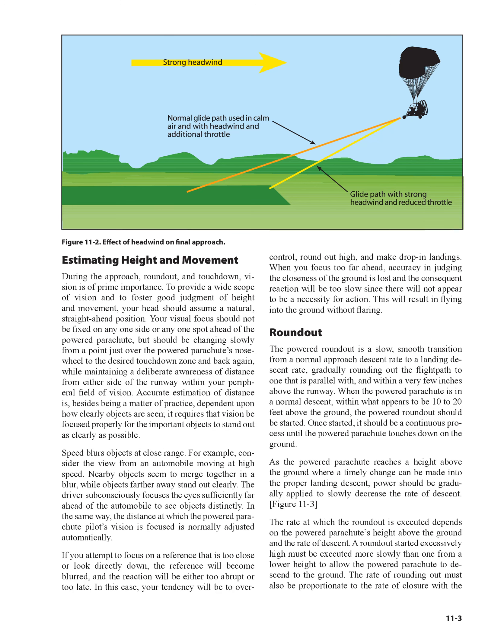Estimating height and movement during the approach, roundout, and touchdown is of prime importance. To provide a wide scope of vision and to foster good judgment of height and movement, your head should assume a natural, straight-ahead position. Your visual focus should not be fixed on any one spot ahead of the powered parachute, but should be changing slowly from a point just over the powered parachute's nose wheel to the desired touchdown zone and back again, while maintaining awareness of distance from either side of the runway within your peripheral field of vision.